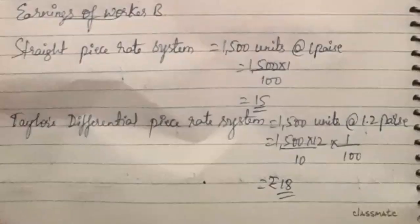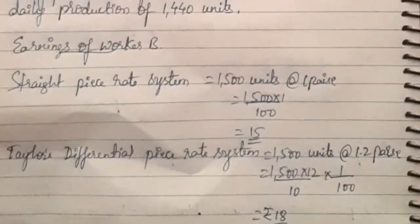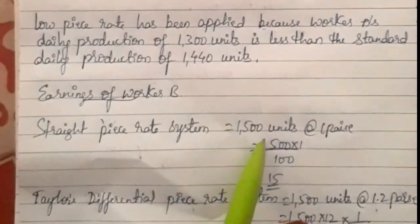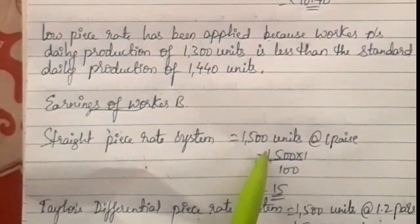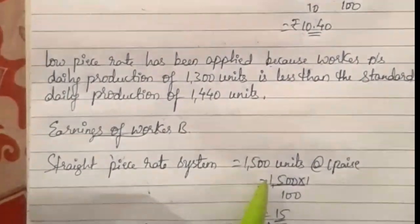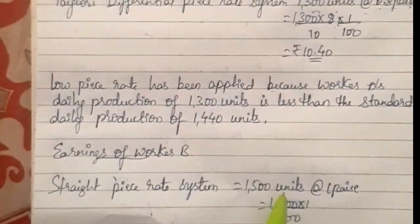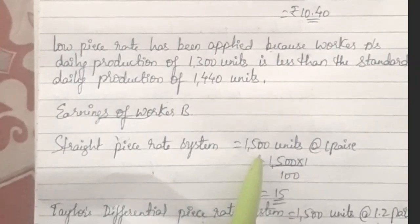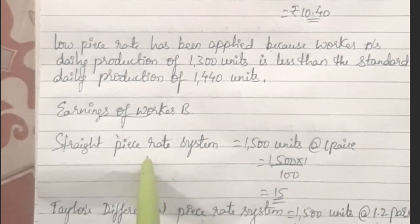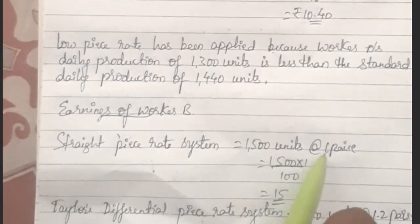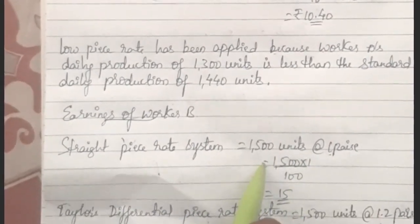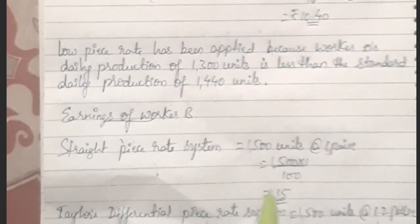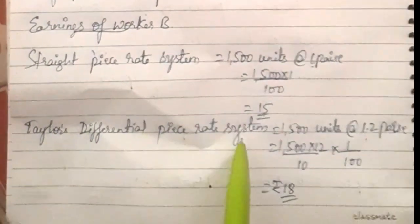Now for worker B under the straight piece rate system. Worker B produces 1500 units, which is above the standard of 1440. Under straight piece rate, the normal rate of 1 paise still applies, so earnings = 1500 × 1 paise ÷ 100, giving rupees 15.